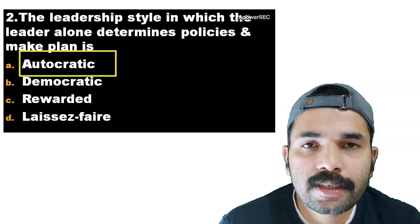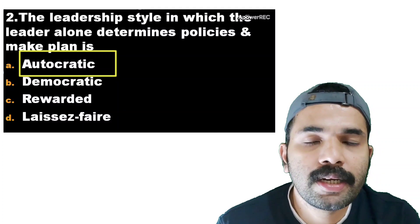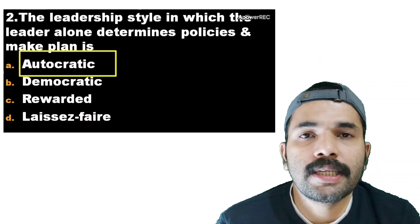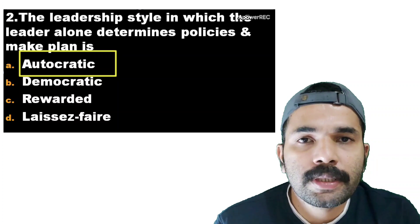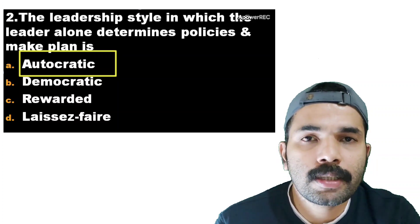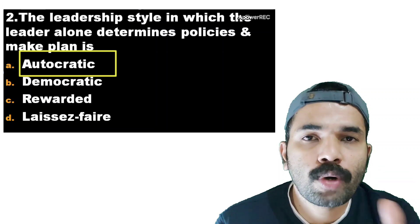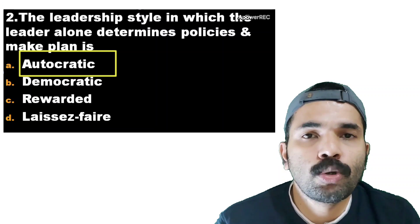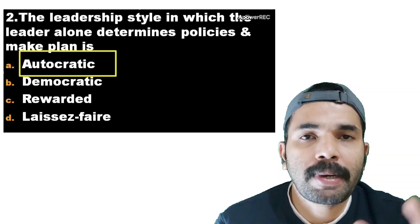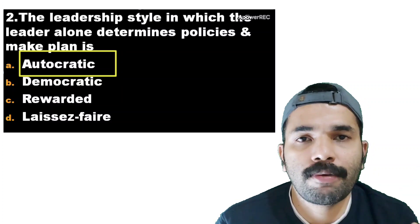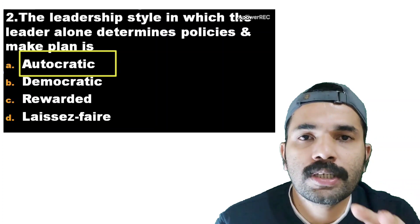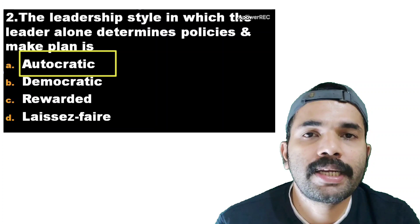In autocratic leadership, the leader alone will take the decision — what the leader says is the answer. In democratic leadership, the subordinates can take decisions along with the supervisor. The supervisor shares power and information with the team. Democratic leadership is considered the most reputed leadership style.